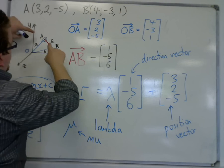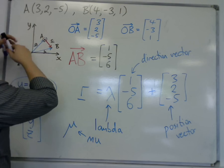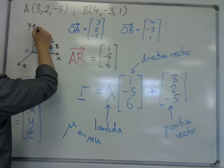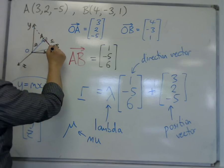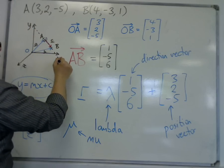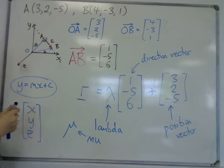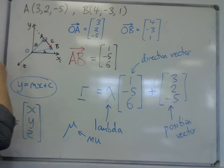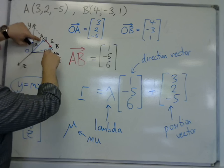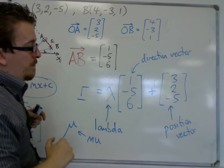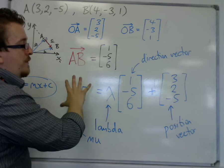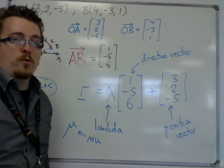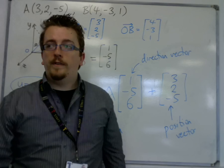So this is the equation in three dimensions of the line that goes through A and B. It's a line that goes all the way through A and B — it doesn't stop, it keeps on going. It's not just a line segment, but the full line that goes through those two points.